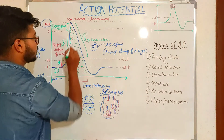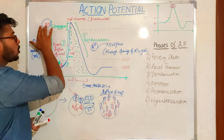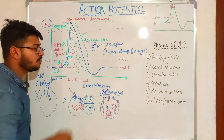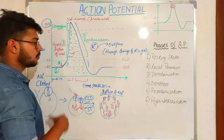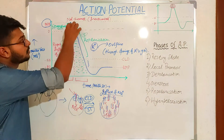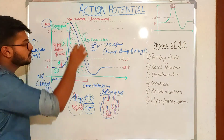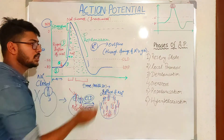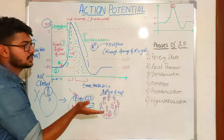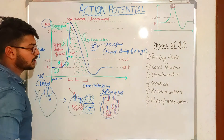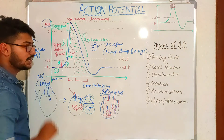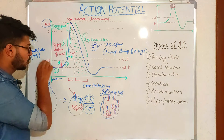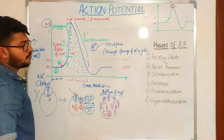This portion of the graph — where the membrane potential decreases from plus 65 back toward minus 55, then continues toward the resting membrane potential of minus 70 millivolts — is known as the negative after-potential. The rapid change of potential during this return is the negative after-potential phase.